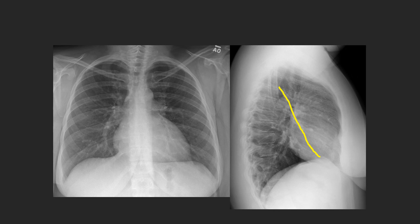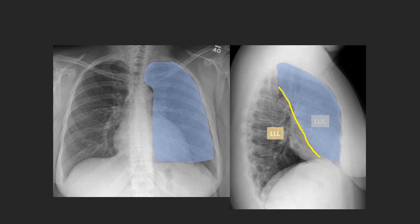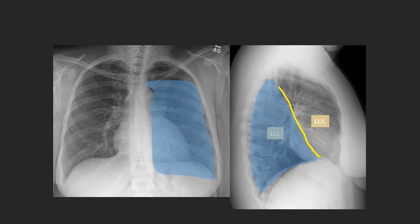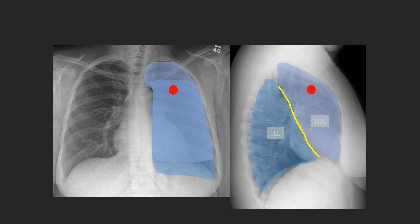On the left side there is only one fissure — the left major or oblique fissure — which is not seen on the frontal view. This divides the left lung into the left upper and left lower lobes. The left upper lobe spans most of the chest cavity, going from the apex almost all the way down to the diaphragm on the frontal view. The left lower lobe contacts the diaphragm and extends far superiorly. Again, due to overlap, we need the lateral view to determine whether a nodule is in the superior segment of the left lower lobe or within the left upper lobe.